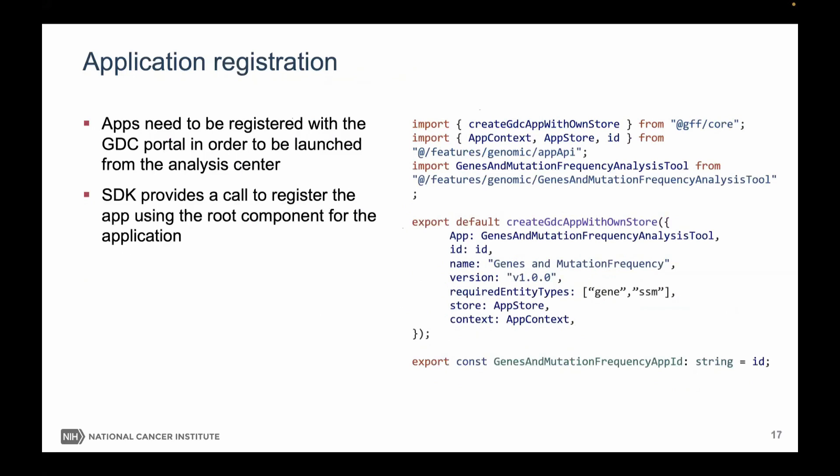Once you have an application, you need to register it with the portal so it shows up in the analysis center. There are two steps. One references the app — we provide these high-level calls where you import the tool, pass the high-level component, give it an ID (created for you by the add-app call), a name, version, a couple of required entity types, and a few other things. That's it — the app is then created and stored within the system and available to be rendered in the web portal.